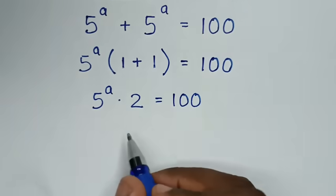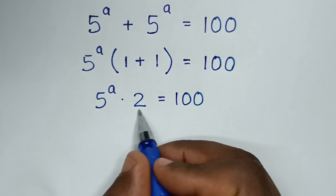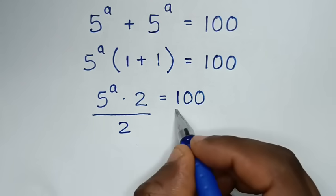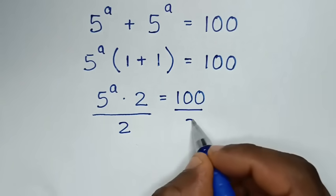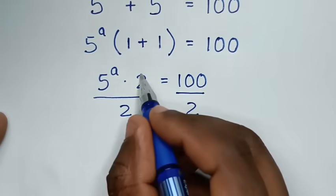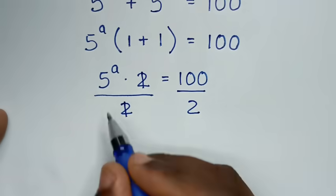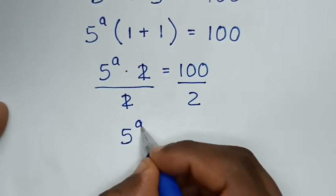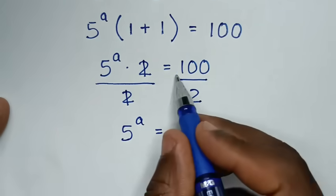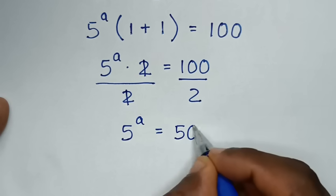Then from here we'll divide by 2 on both sides. So it will be over 2 on this side and over 2 on this side. Now to simplify, the 2 will cancel. So it will be 5 power a is equal to 100 divided by 2, which is 50.